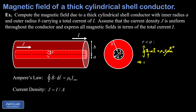Using the fact that the dot product is trivial and B is constant in magnitude so it factors out of the integral, we're left with the path integral of dl, which is just the circumference of the Amperian loop. The left-hand side becomes B times 2πr, and the right-hand side is zero because the enclosed current is zero inside the cavity. Dividing both sides by 2πr, we find B = 0 when r < a.